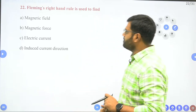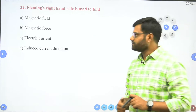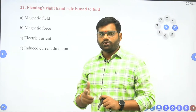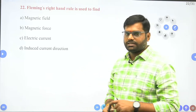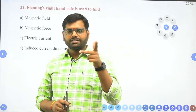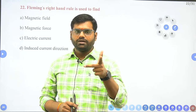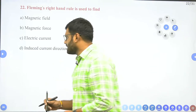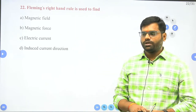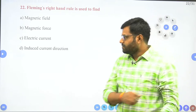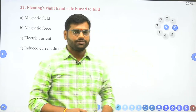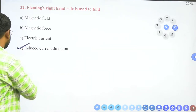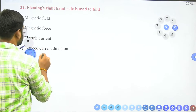The question asks: Fleming's right hand rule is used to find — magnetic field? No. Magnetic force? No, for magnetic force we use Fleming's left hand rule on a current carrying conductor. Fleming's right hand rule tells us the direction of induced current. So the answer is the fourth option.